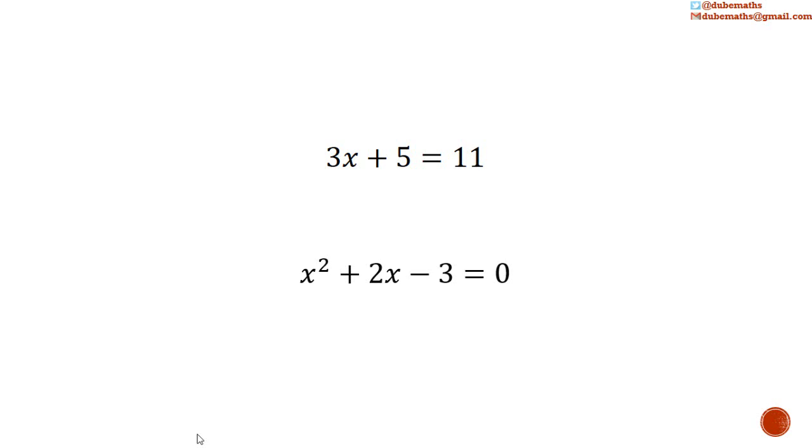What number, when squared, that is of course multiplied by itself, then add it to 2 times itself, then subtract 3 would give 0?